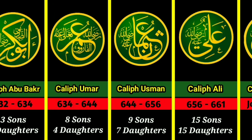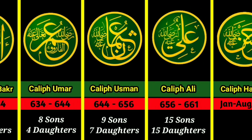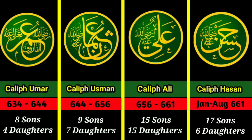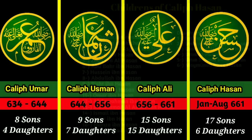Caliph Ali was succeeded by his elder son Hassan. Caliph Hassan had 23 children — 17 sons and 6 daughters. His sons' names were: